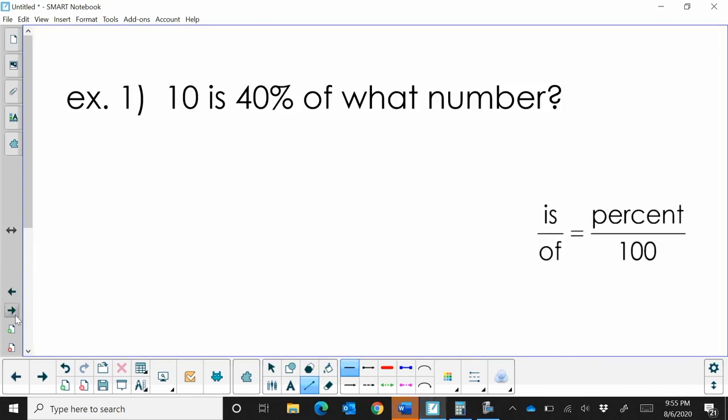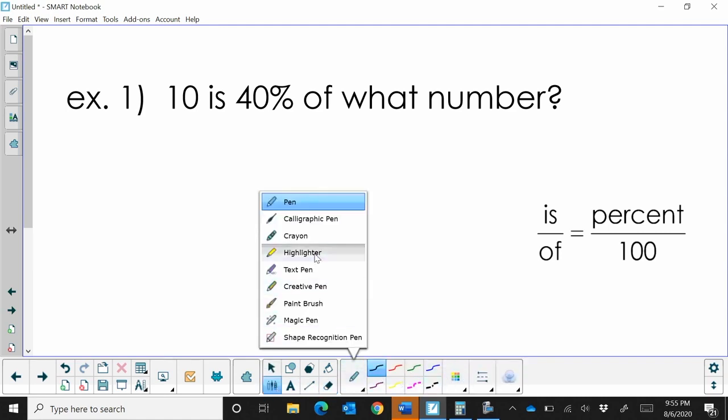So let's try one. First example is 10 is 40% of what number? So what I want you to focus on are these keywords: is, of, and percent. So let's highlight where those numbers are.